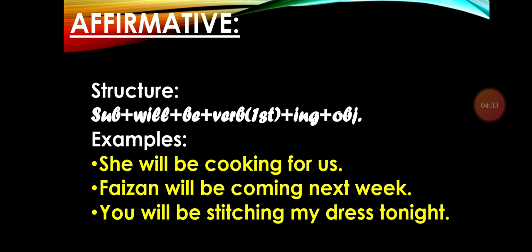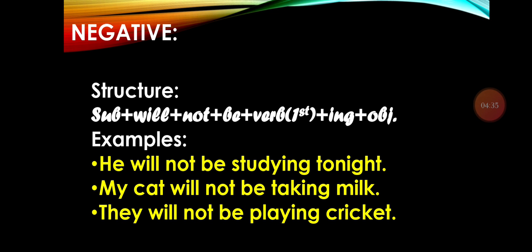For the negative form, only 'not' is added, and 'not' will come after 'will,' not after 'be.' For example: 'He will not be studying tonight.' Not: 'He will be not studying tonight' — that is a grammatical mistake. Most students get confused about whether to place 'not' before or after 'be.' Remember: 'not' always comes with the helping verb.